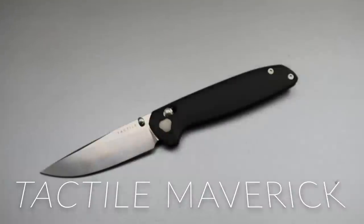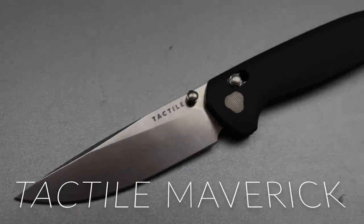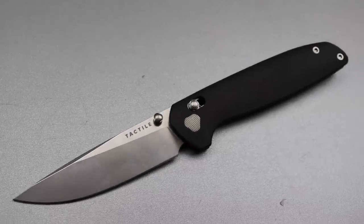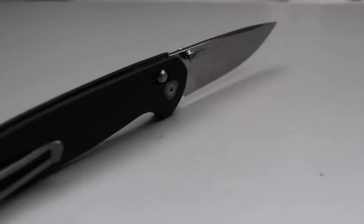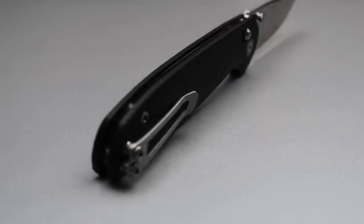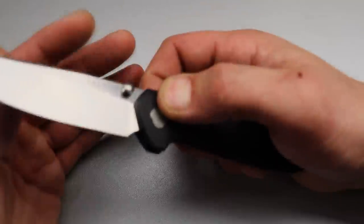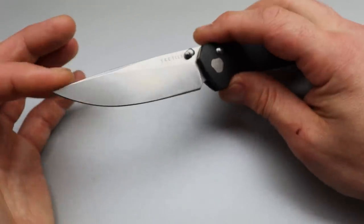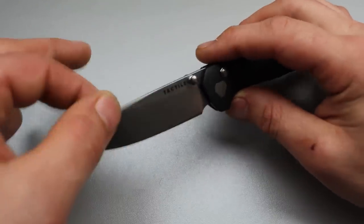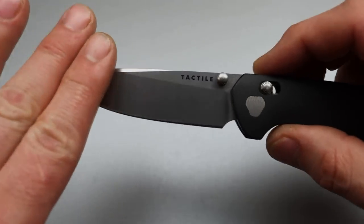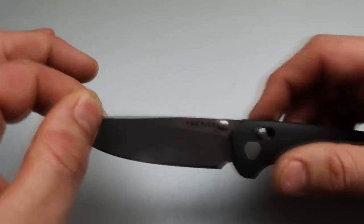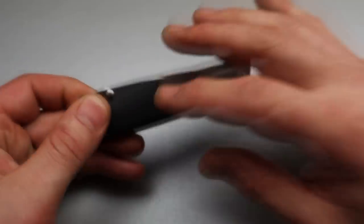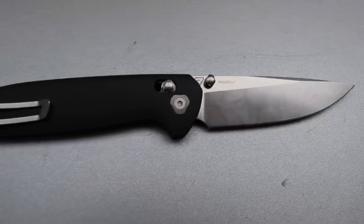Now the next one is the Tactile Maverick. This is a USA made knife that I have an entire full review on doing all kinds of testing and everything else. We do an edge retention test and you'll really hear my full opinion on this knife. So definitely go and check it out. I also did a shop tour at Tactile. Anyways, Magnet Cut steel at 63 to 64 HRC. And it did really good with its edge retention test. So go check that out.